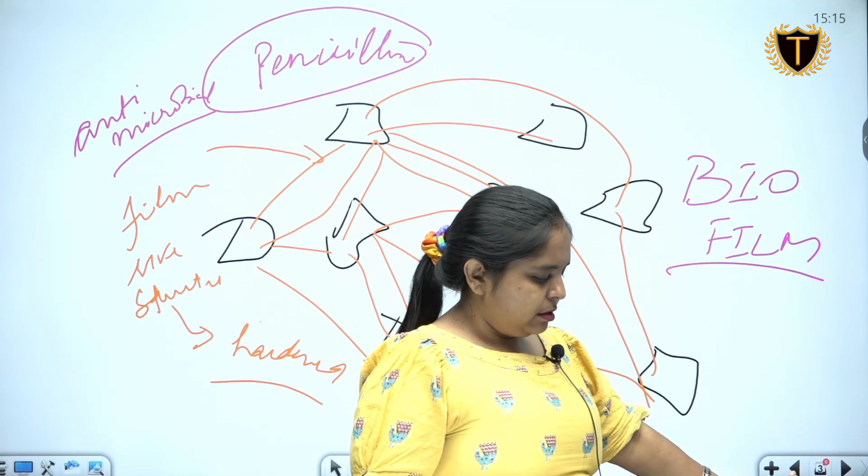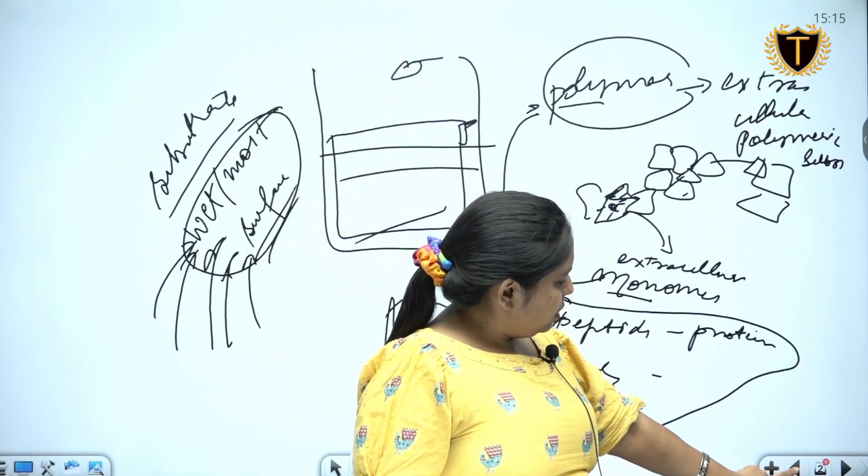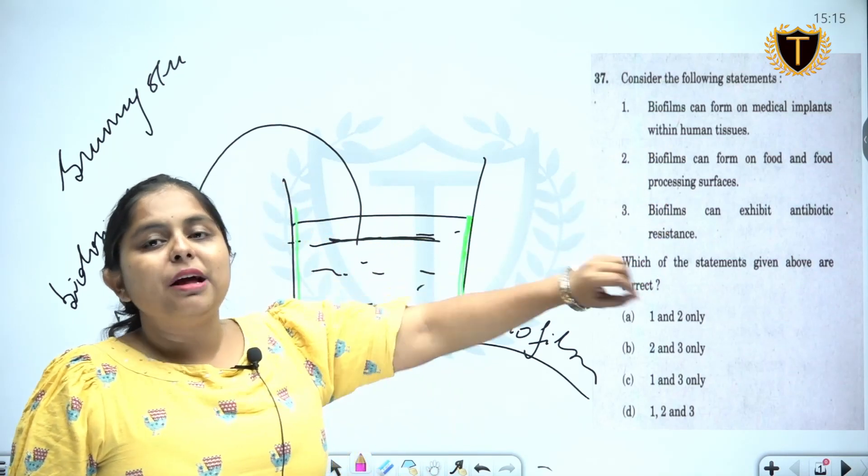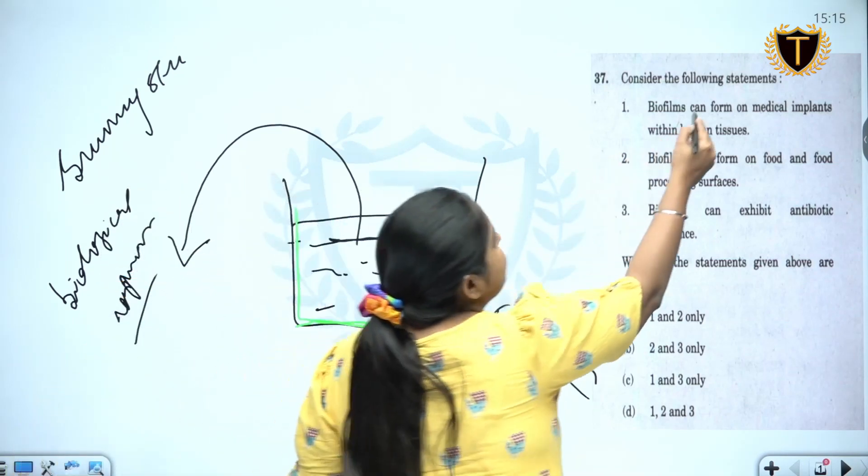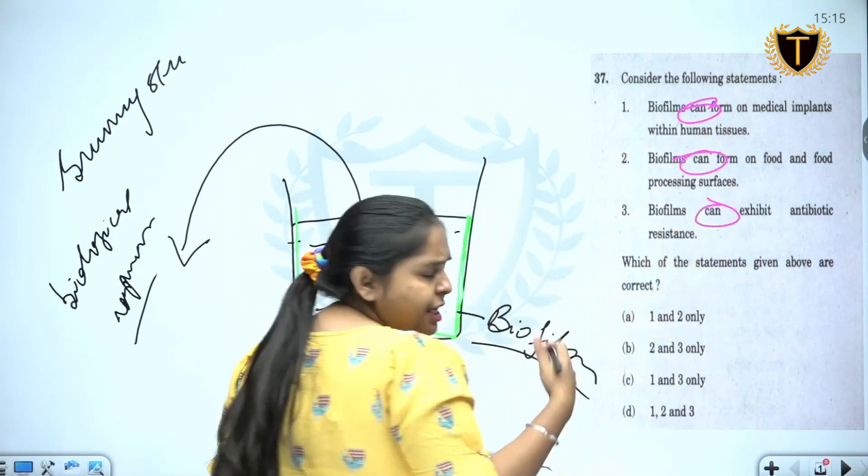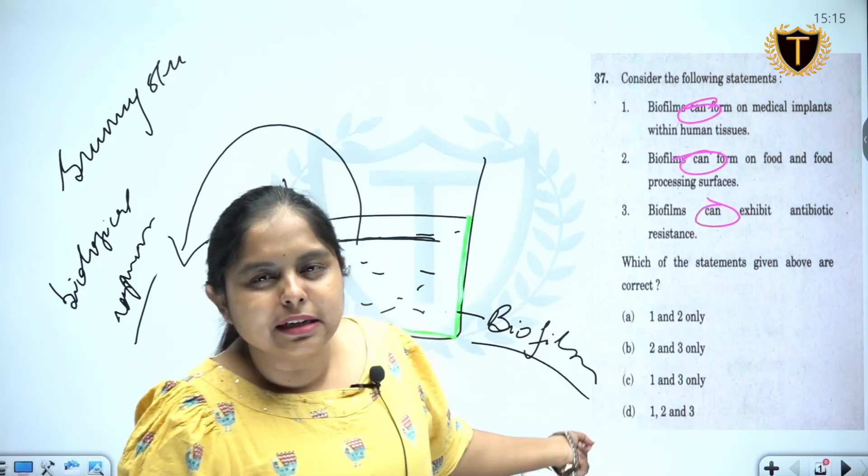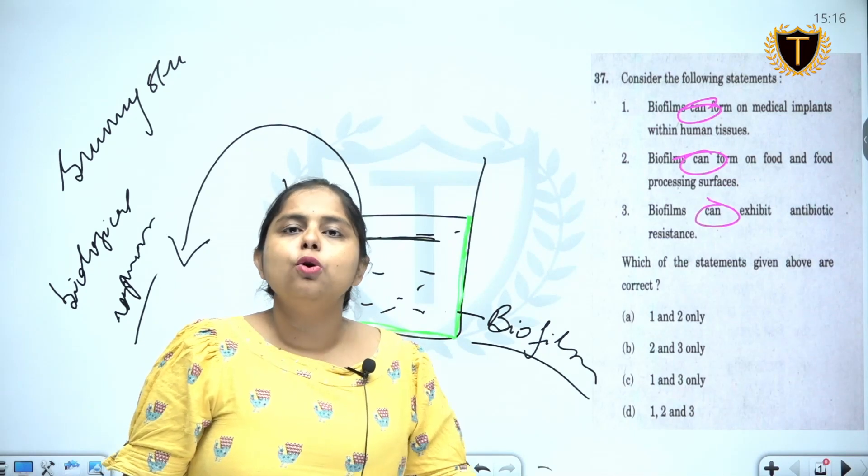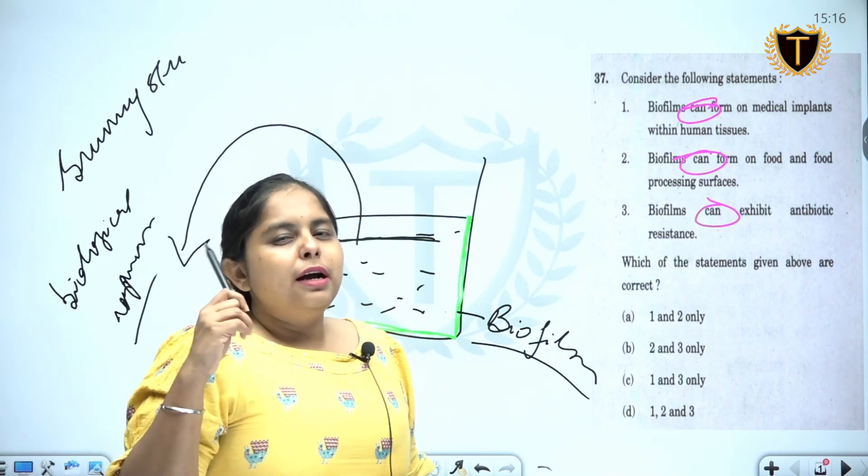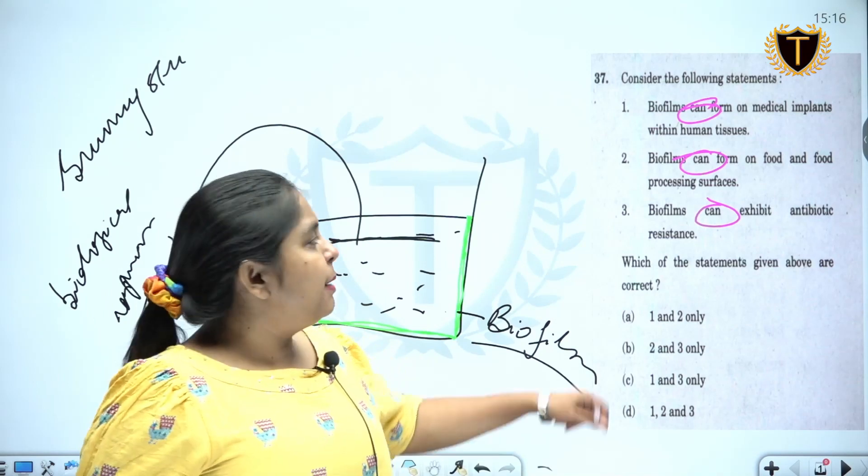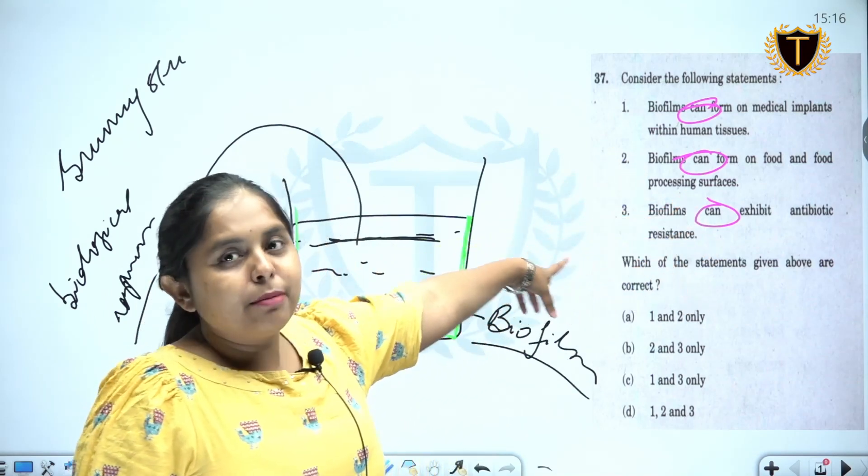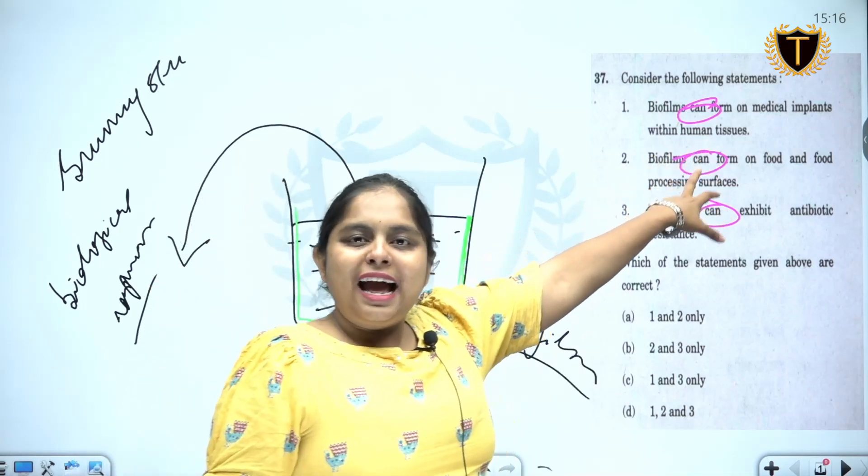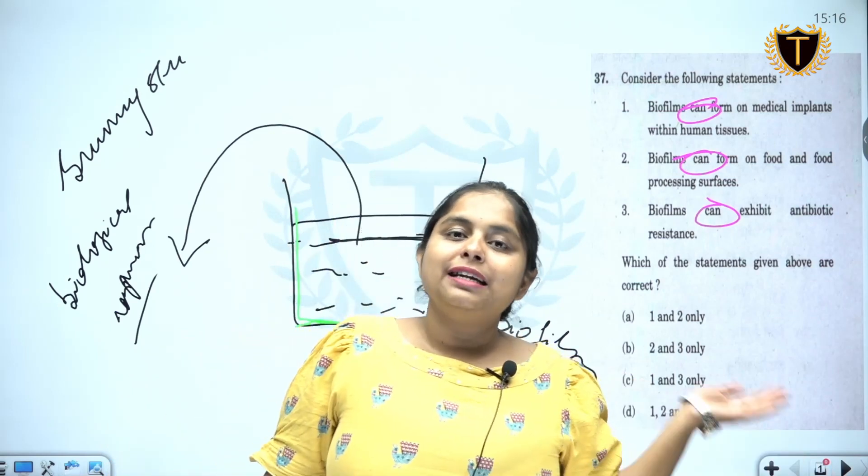Coming back to the question: 'can form on medical implants within human tissues'. They can form anywhere. Now UPSC initially had this tendency of leaving behind hints. UPSC has stopped it to a certain extent now, although still the answer does have loaded hints to figure out the answer. But this kind of statements have been eliminated by UPSC from this year onwards, 2023 onwards. But these 'can' kind of statements are already giving you a hint that they are correct.